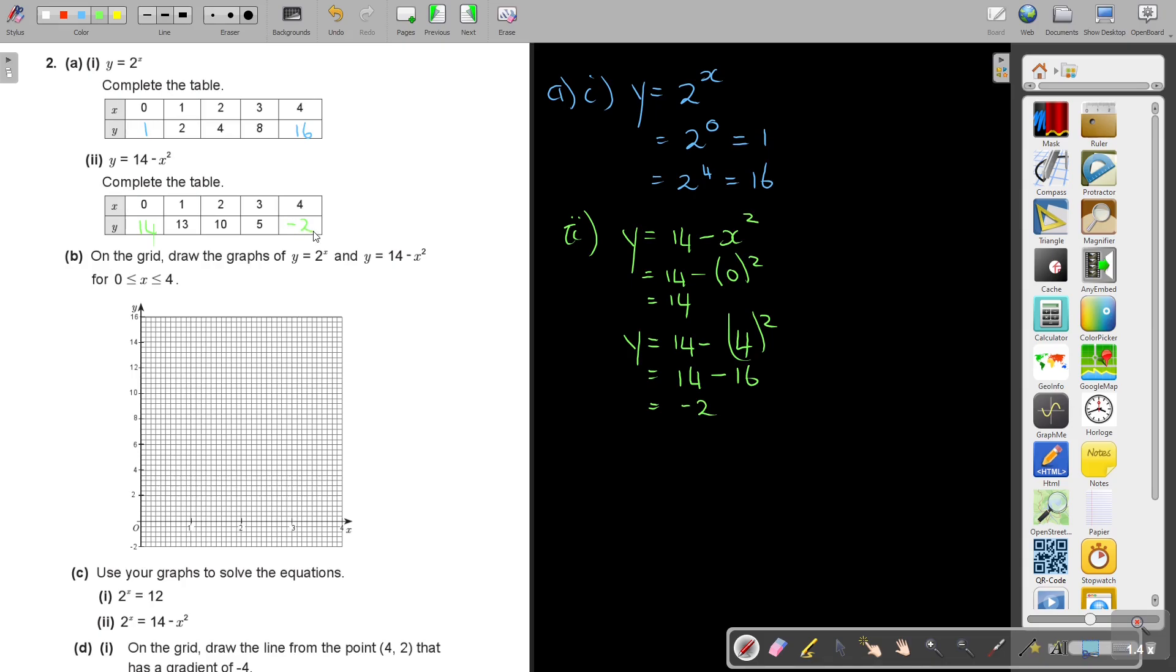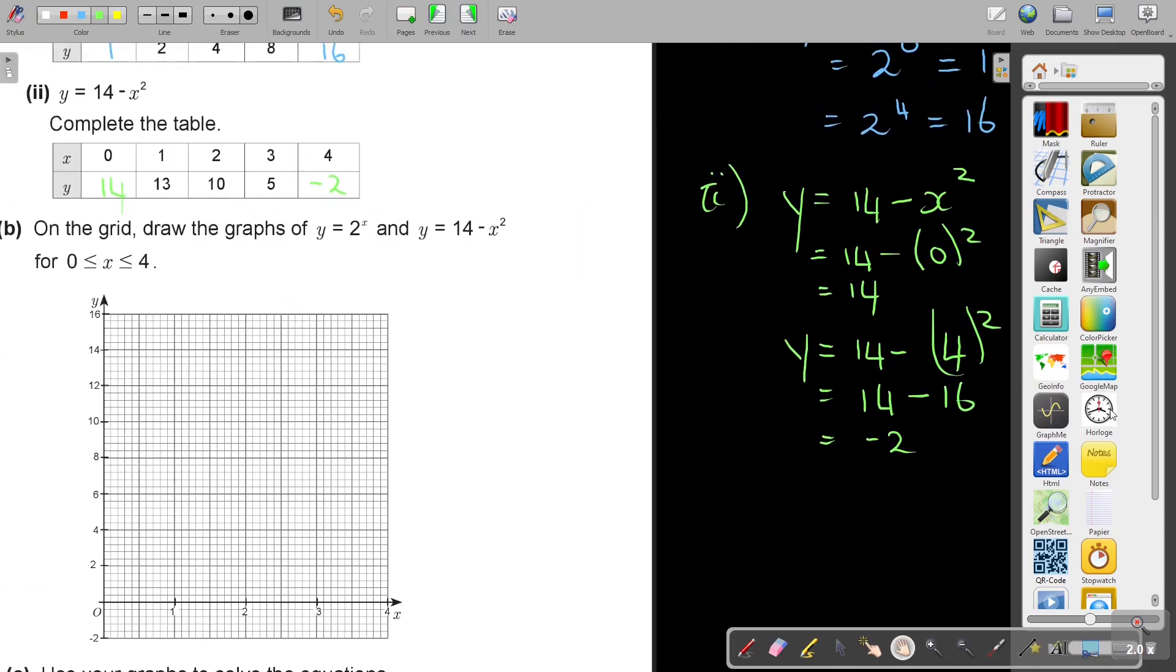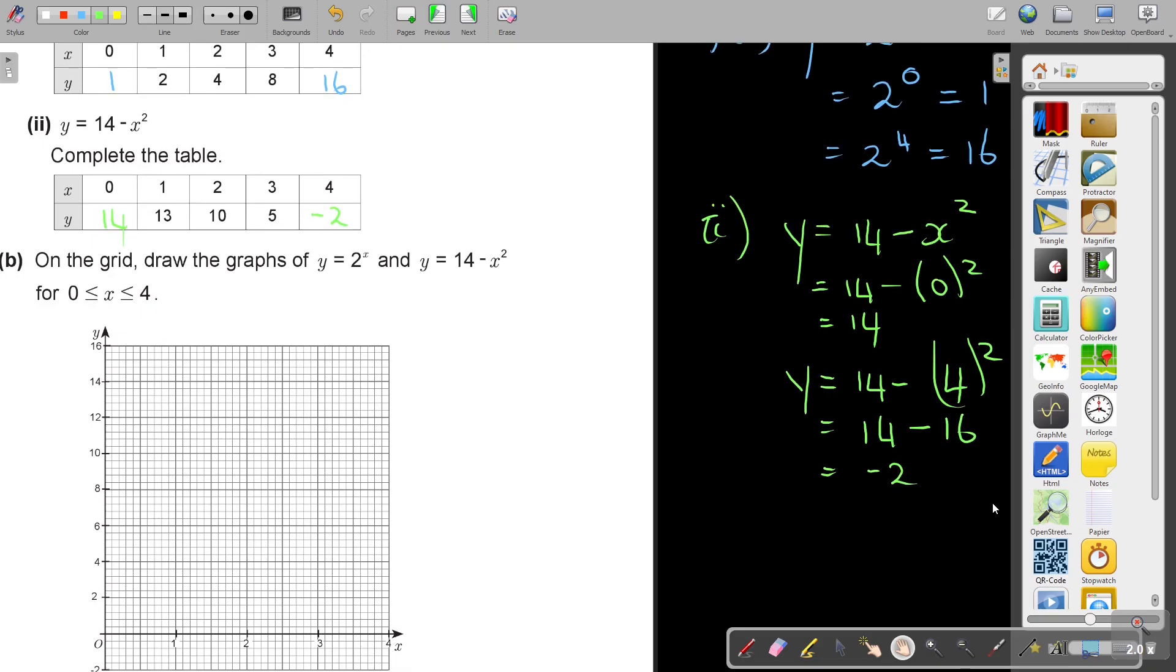So on the grid, draw the graphs of this from 0 to 4. Let's just make it bigger and start by plotting the points. Let me look at my scales. If this is 1 divided by 10, so it's 0.1, 0.2, 0.3, 0.4. This is 2 divided by 5, so it's 0.2, 0.4, 0.6, 0.8. This is going to be 2 divided by 5, it's 0.4. So this is 0.4, 0.8, then 1.2, 1.6, 2. I always check it before I start.